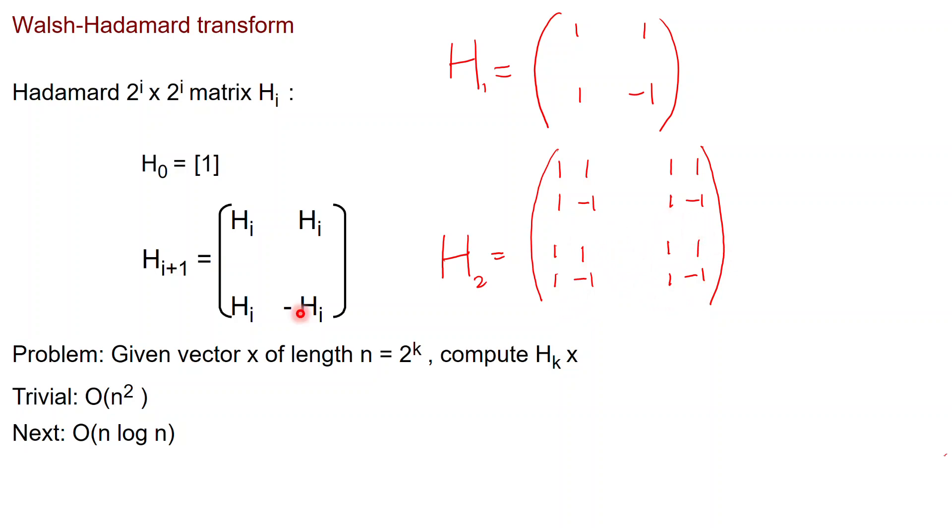However, for this last copy I have to flip the signs, so you get minus, minus, minus, and plus. The problem that we're interested in is multiplying a vector x of length n, which is equal to 2 to the k, the side length of the matrix, by the corresponding Hadamard matrix.